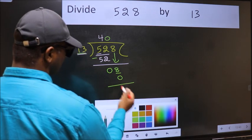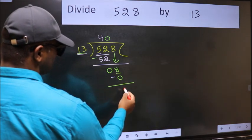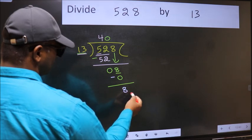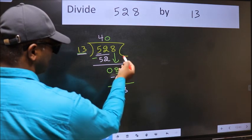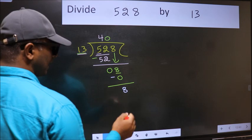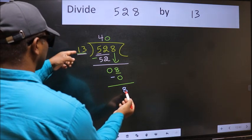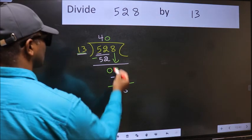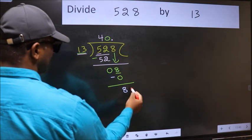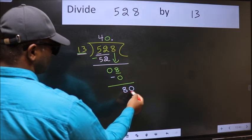Now we should subtract. 8 minus 0, 8. Over here we did not bring any number down. And 8 is smaller than 13. So now we can put dot and take 0. So 80.